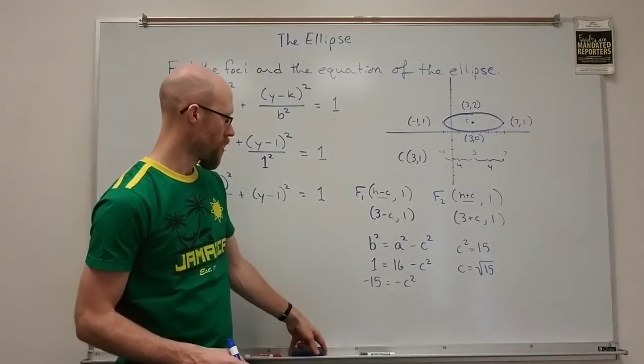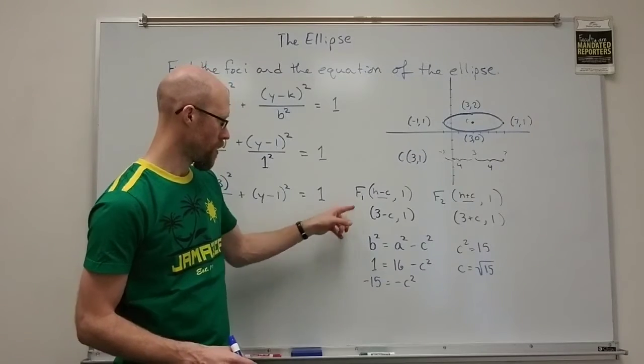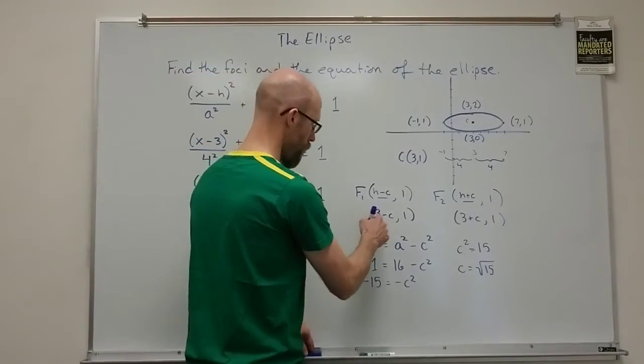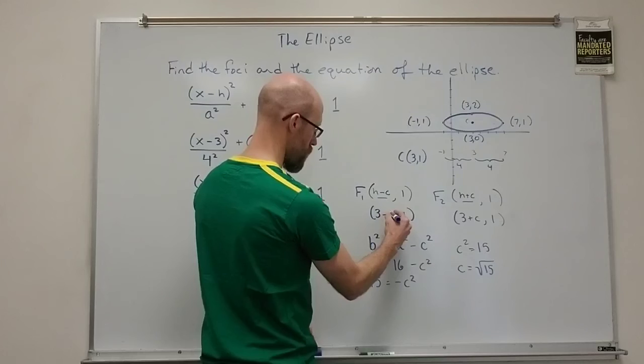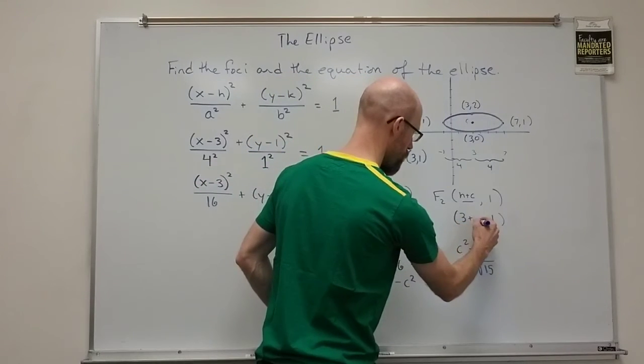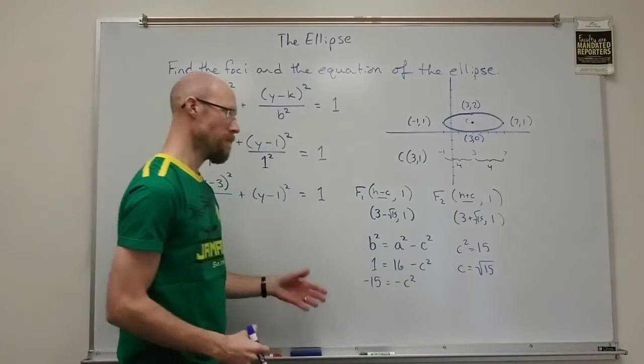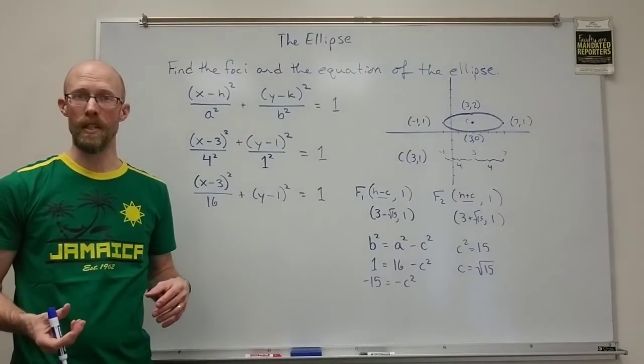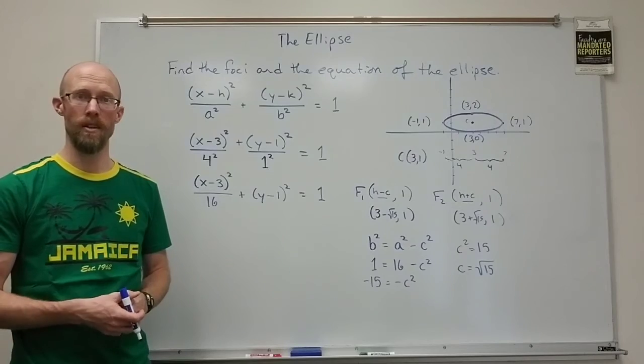And so that means that our final foci c value is root 15. This c value is root 15. Now 3 plus or minus root 15 is fine. That's a good exact value.